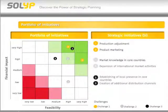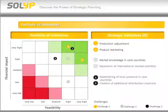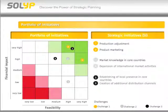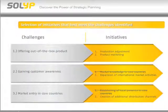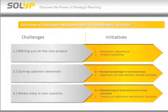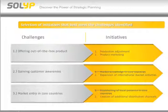All initiatives developed are then combined into a portfolio and ranked according to their financial impact and feasibility. The portfolio helps to identify the initiatives best suited to meet the strategic goals — in other words, it allows you to systematically filter out those initiatives that are not in the green area. In this way, a package of promising initiatives can be put together. In our example, the highest ranked initiatives are the adjustment of the product marketing and the creation of additional distribution channels.